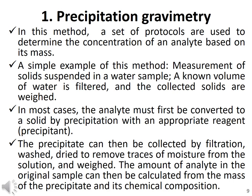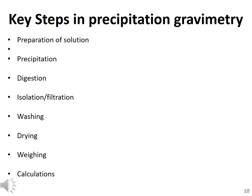After removing traces of moisture from the precipitate, the precipitate is weighed. The amount of analyte in the original sample can then be calculated from the mass of the precipitate and its chemical composition.